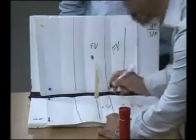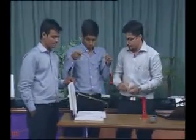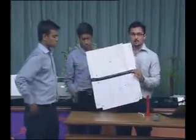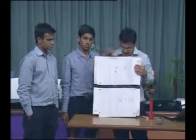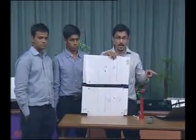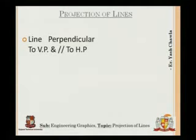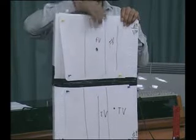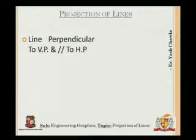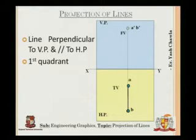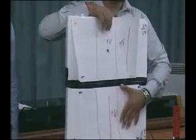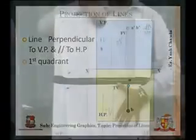Here I will have a straight line which will be my top view. I will do the same thing and turn this out so you are able to view the different cases. In this first case I had my line parallel to VP and perpendicular to HP. This is my second condition: the line is perpendicular to VP and parallel to HP. The vertical projection will be a point and the horizontal projection will be a straight line, as depicted in the second case on the slide.